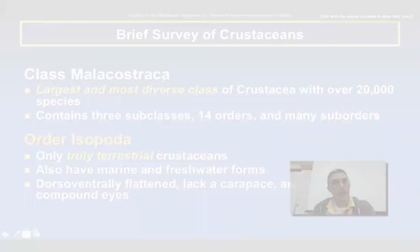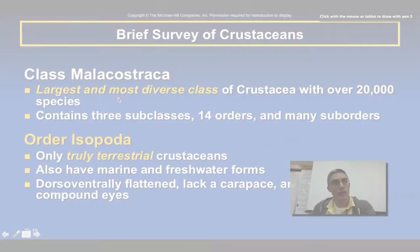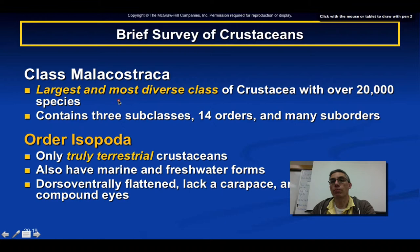The class Malacostraca is considered the largest and most diverse class of crustaceans, containing over 20,000 different species. Those species are found in three subclasses, 14 orders, and a large number of associated suborders.